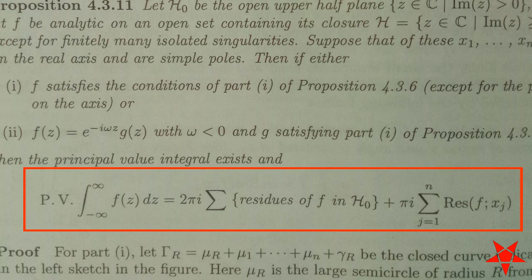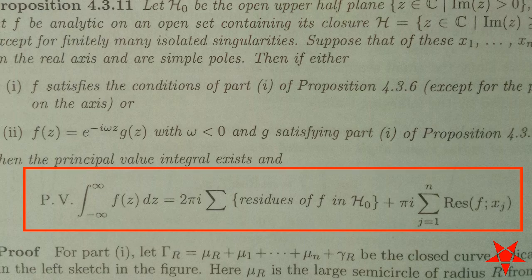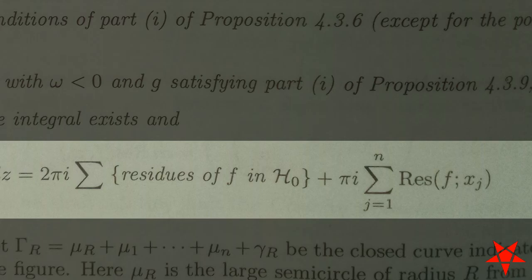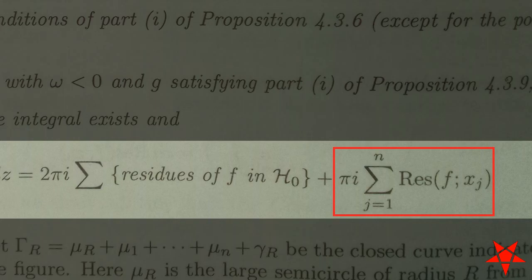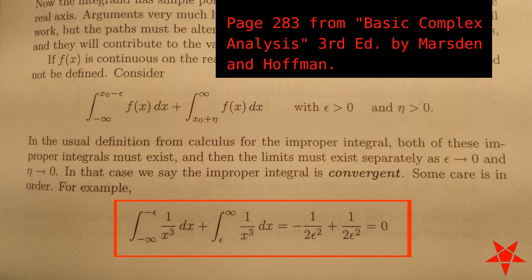The Cauchy principal value, denoted by PV, indicates an alternate method of evaluating the individual limits of an improper integral. This method involves some additional symmetries specific to how those limits are evaluated. The first and second terms on the right side of the equation apply to residues in the upper half of the complex plane, not including the real axes, and to residues located on the real axes respectively.